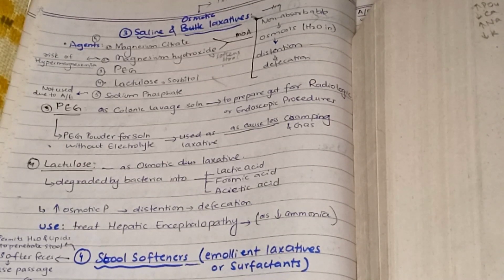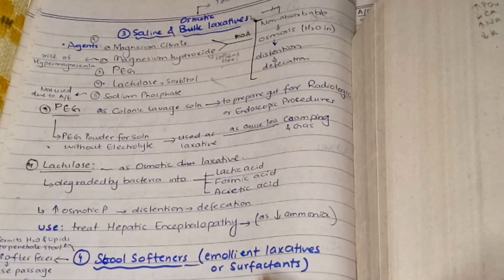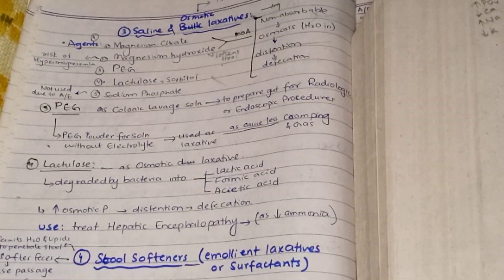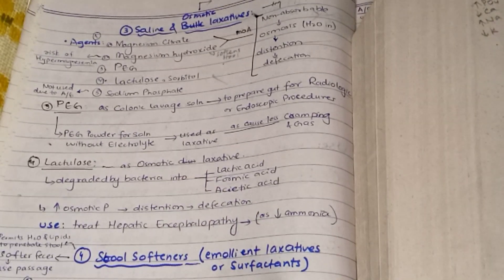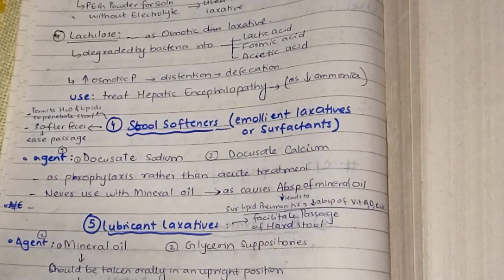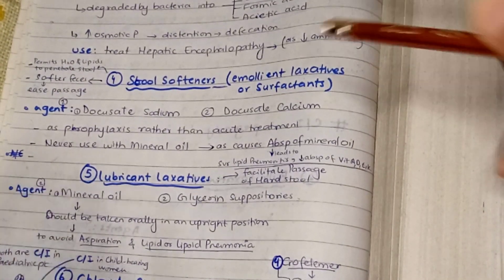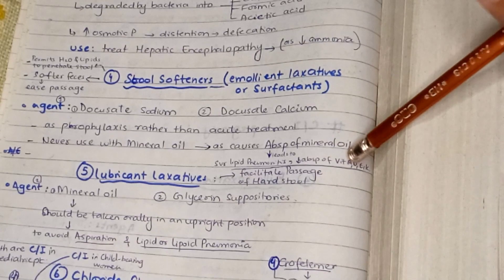Stool softeners, also known as emollient laxatives or surfactants, act on the surface of the stool. Their mechanism of action is to permit water and lipids to penetrate the stool, softening the feces and allowing easy passage. The agents include docusate sodium and docusate calcium, used prophylactically rather than for acute treatment. They are never used with mineral oil because they would absorb it, which can lead to severe lipoid pneumonitis and decreased absorption of vitamins A, D, E, and K.